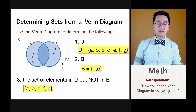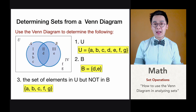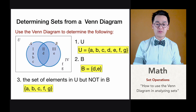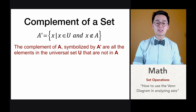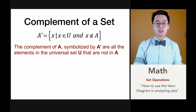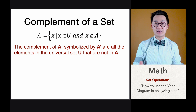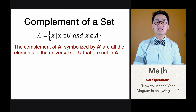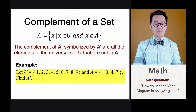This is how we look at the Venn diagram and identify distinct elements in a specific subset. Now let's talk about the complement of a set. The complement of a set, given by the symbol A apostrophe — also called A prime, A complement, or complement of A — is the set of all X such that X is in the union set but X is not an element of set A.